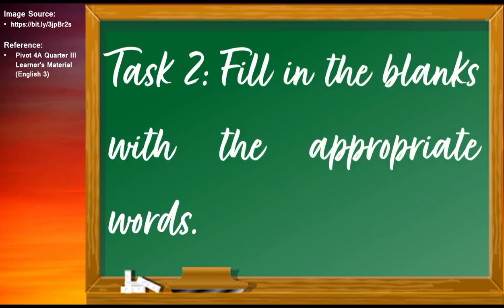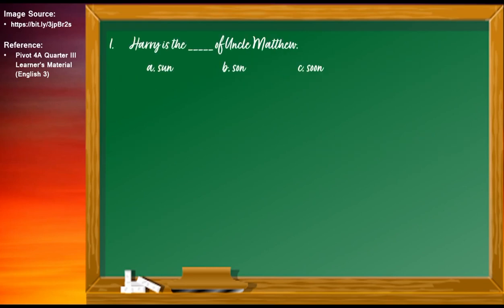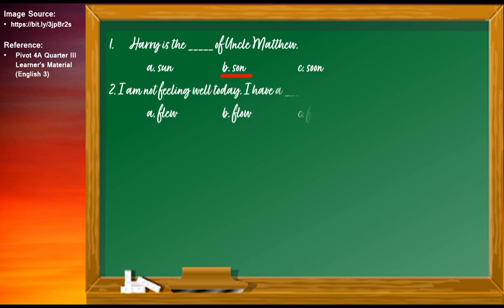For our second task, I want you to fill in the blanks with the appropriate words. The correct answer for the first sentence is LETTER B: Harry is the son of Uncle Matthew. For number two, the correct answer is LETTER C: I am not feeling well today, I have a flu.